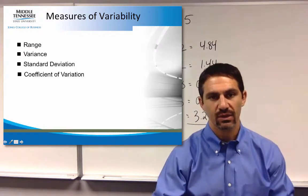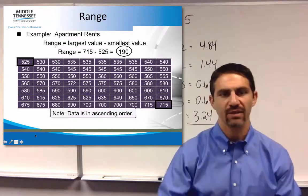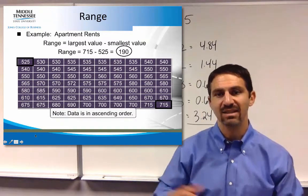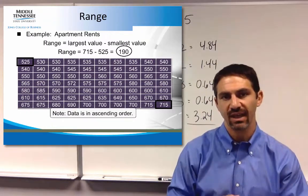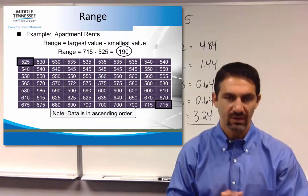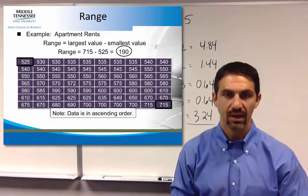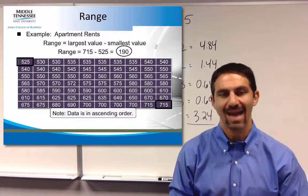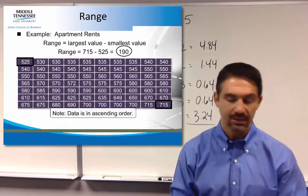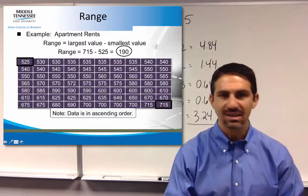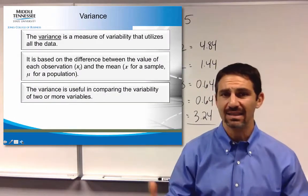The easiest measure is the range. You take the highest value, in this case 715, and subtract the lowest value of 525, and you get your range of 190. Pretty easy to do, and that helps us get an idea of where data is.